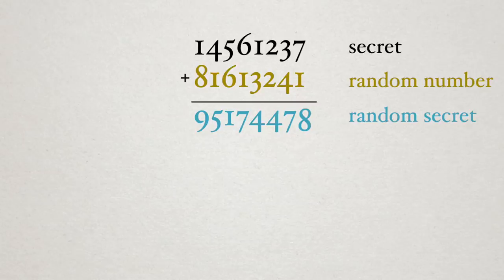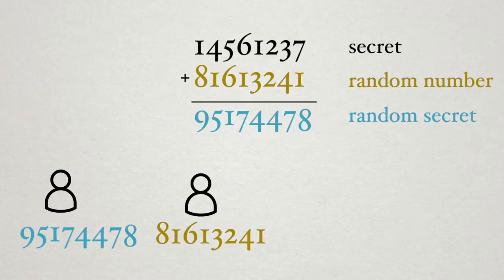which we can give to each person without either of them seeing the original secret. One person gets the random number, the other gets the result of adding the secret to a random number, or a random secret. There is no way to extract the original number from what is available to either person.